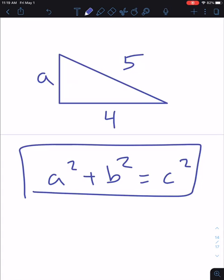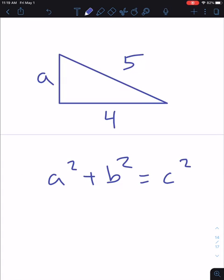Our first step is to write down Pythagorean's theorem: a squared plus b squared equals c squared. Now we just plug in what we know. We don't know a squared so I'm just going to leave that there, plus b squared is 4 squared, and c is 5 so we've got 5 squared.